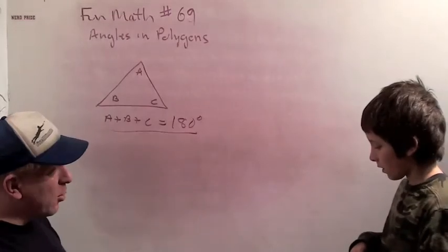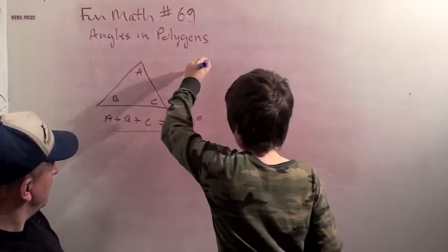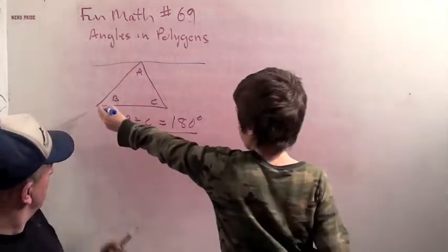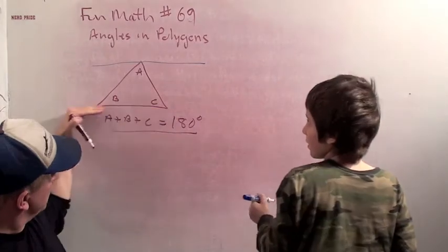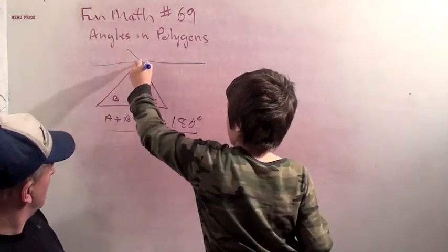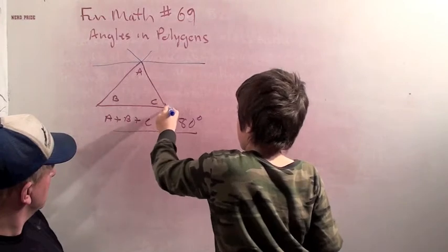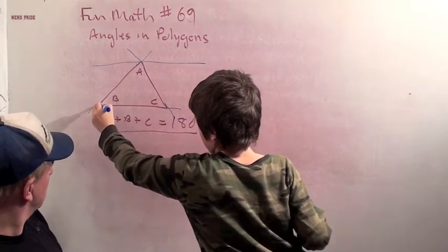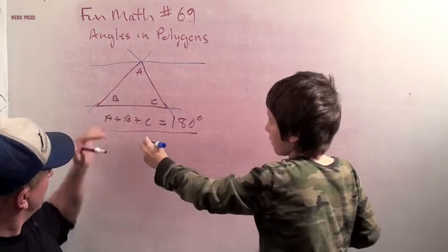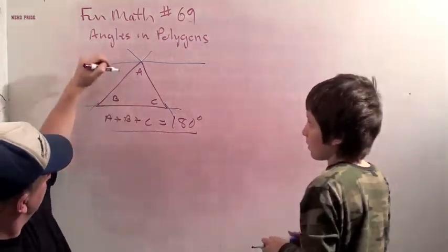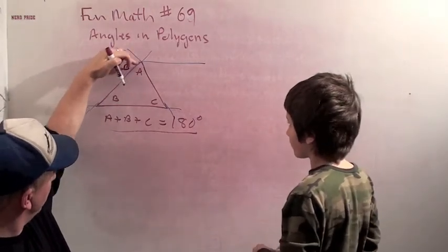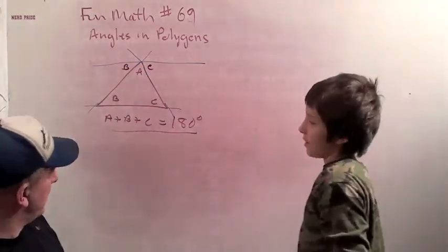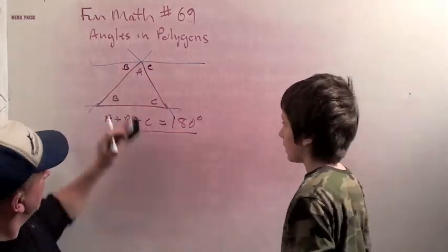Do you remember how we showed that? We drew a line. Go ahead and draw it up here. What's special about this line that we draw? It's parallel to line BC, parallel to this line down here. And we extended these lines. Because it was parallel, this angle here is equal to angle B, and this angle here is equal to angle C. We have angle A, B, and C on the straight line, so they add up to 180. Very good.